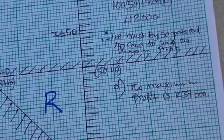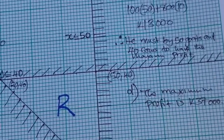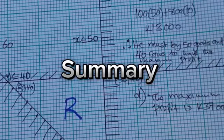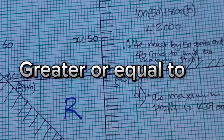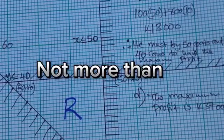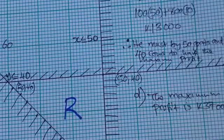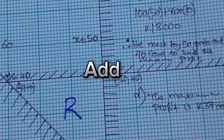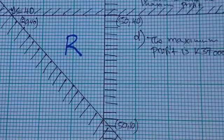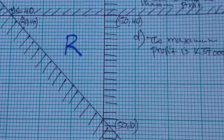In summary, when answering linear programming questions: 'at least' means greater than or equal to; 'not more than' means less than or equal to; and 'altogether' means you need to add. Thank you very much for watching. If you are new to this channel, please subscribe, hit the like button, comment, and share.